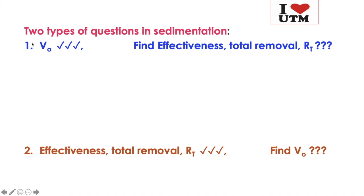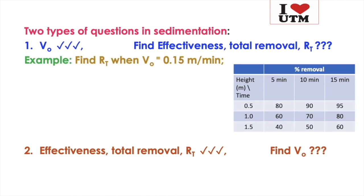For today, we will go through the first part: v_naught is given. In this example — which is not in your textbook, so feel free to jot it down — find the R_T or effectiveness when v_naught is 0.15 meter per minute. The data table comes from the previous settling column experiment starting with 100 milligram per liter of silicon, probing concentration at different heights and times to calculate percentage removal.